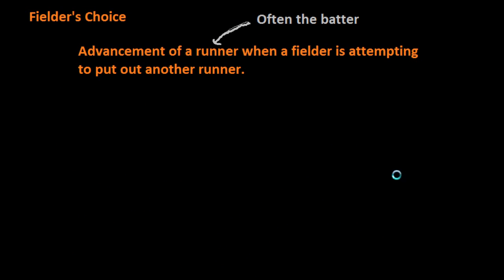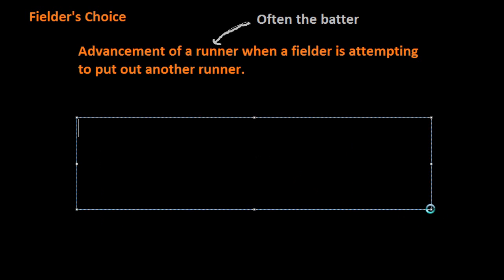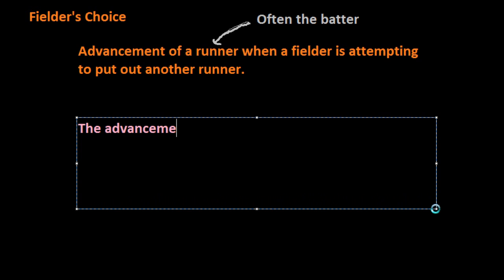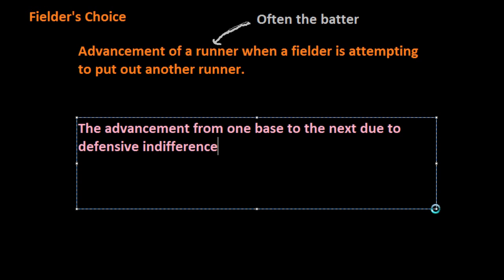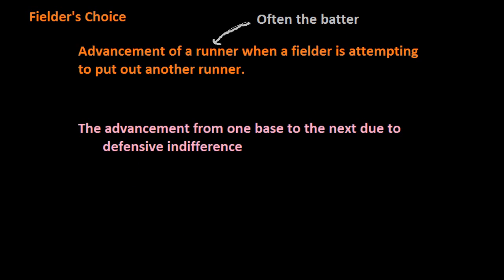The final way you can have a fielder's choice is when a runner is attempting to steal a base, but if the score is really out of hand late in the game and the defense doesn't want to bother with him, we would consider his advancement not a stolen base but a fielder's choice. This is the advancement from one base to the next due to defensive indifference. Sometimes you'll hear it called defensive indifference.